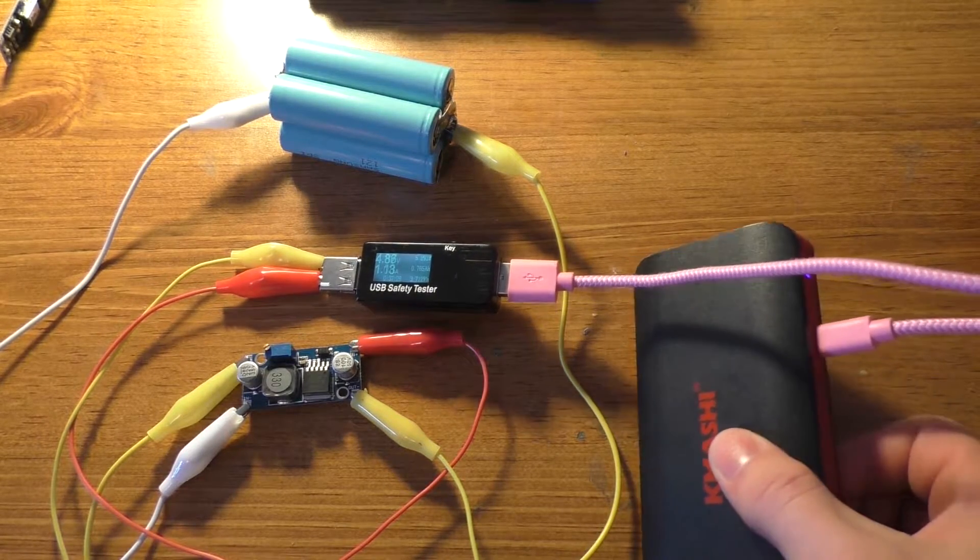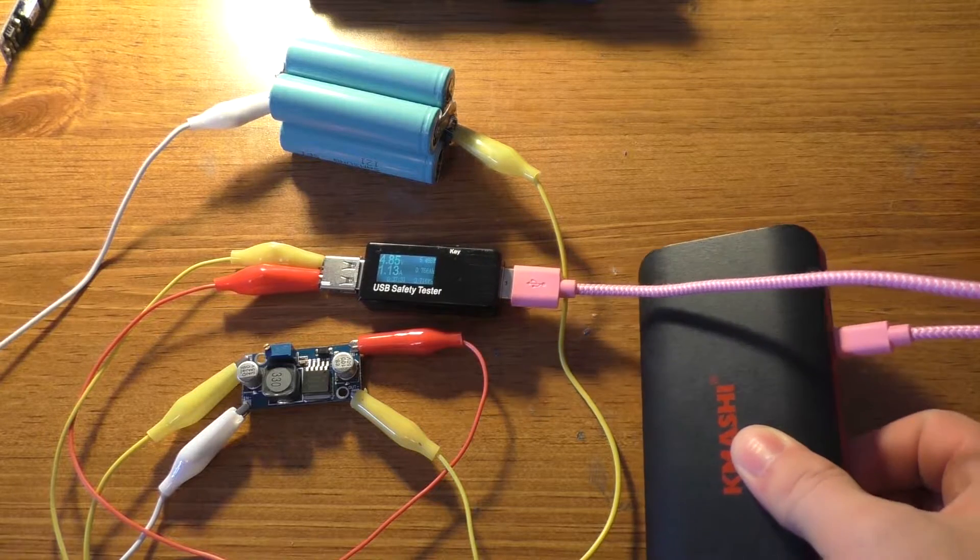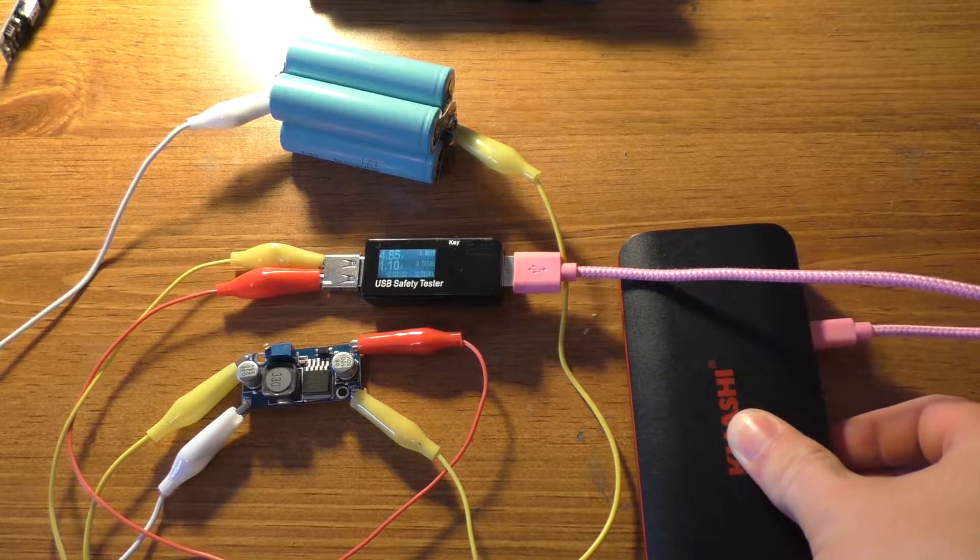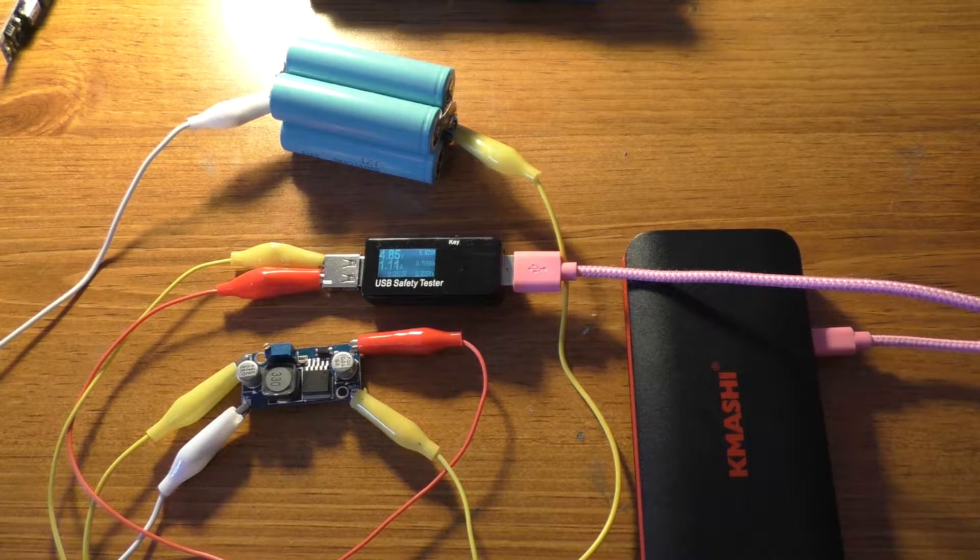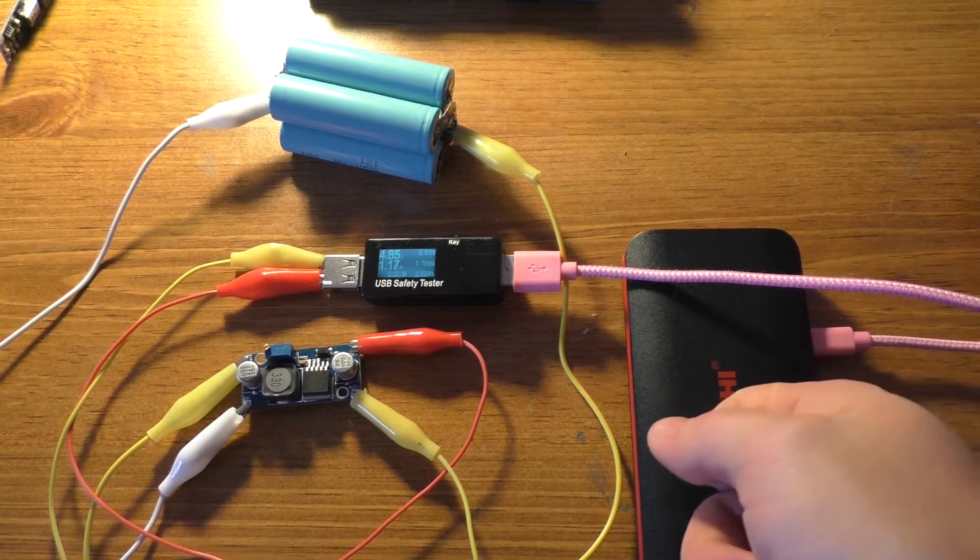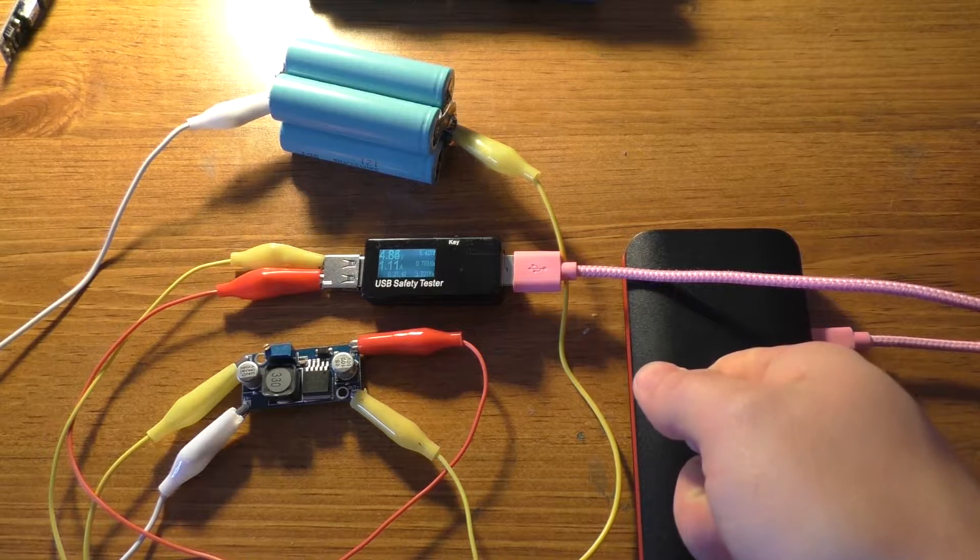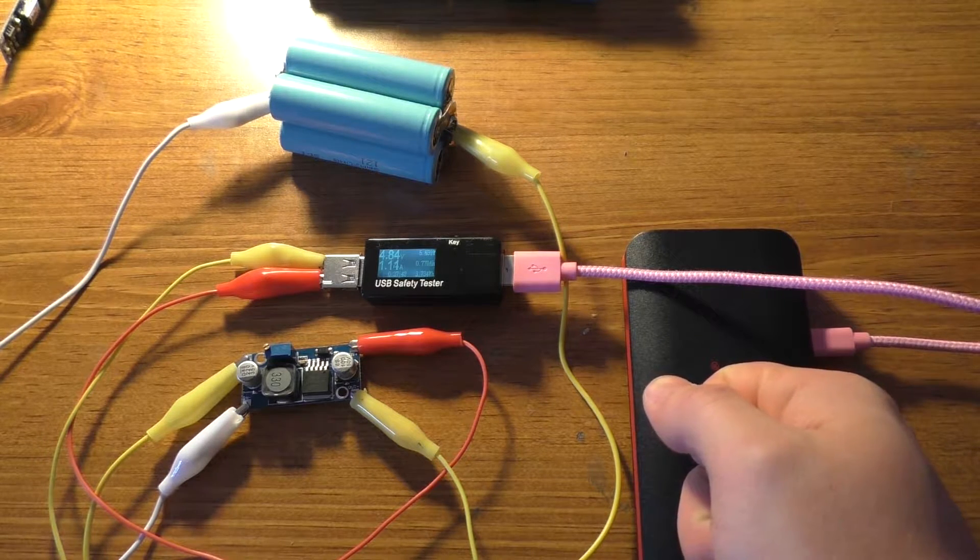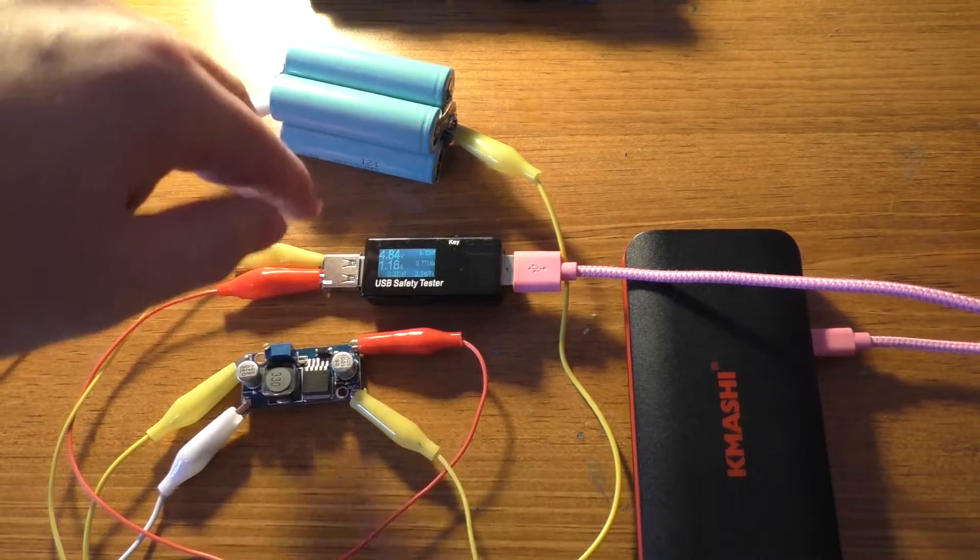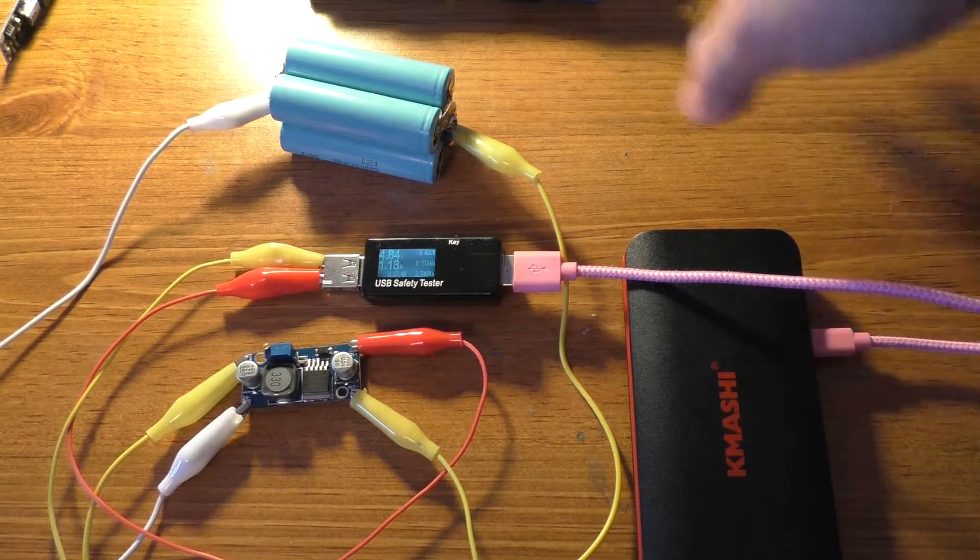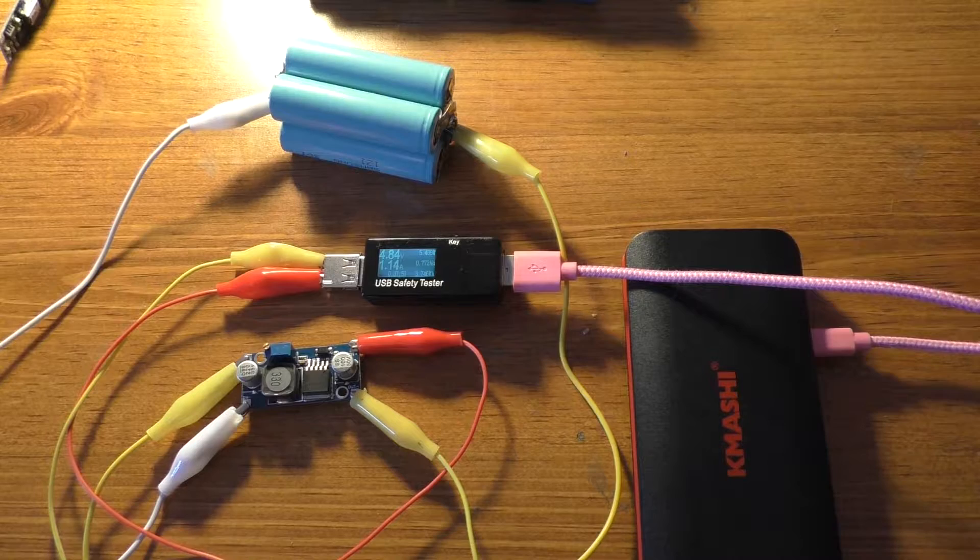Anyway, then again, they might just stay at that 3.8 to 3.7 volt range for quite a while. And this is a 10,000 milliamp hour power bank, which, or at least it claims to be a 10,000 milliamp hour power bank at 37 watt hours. So we should be able to put at least that much current or capacity into this. Yeah, but anyway, I'll go ahead and let these batteries discharge, and then I'll switch over to the other set, and we'll continue our testing.